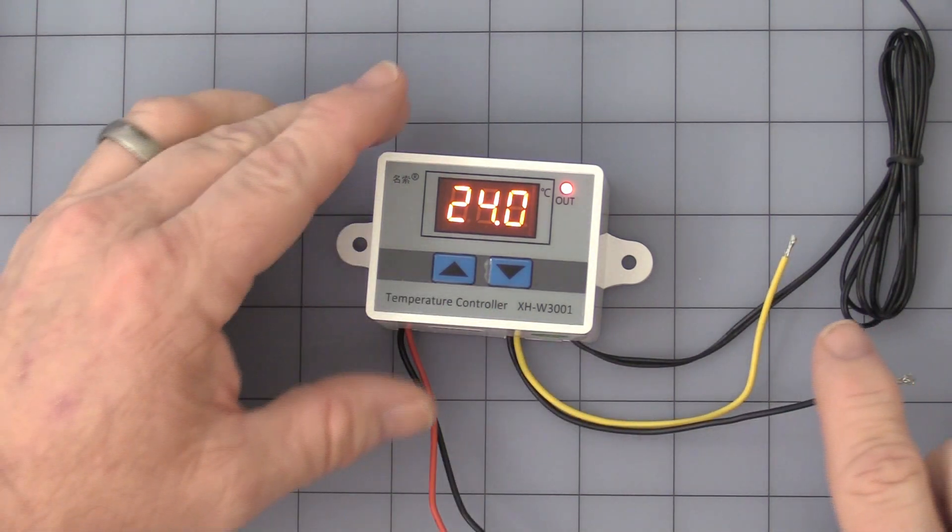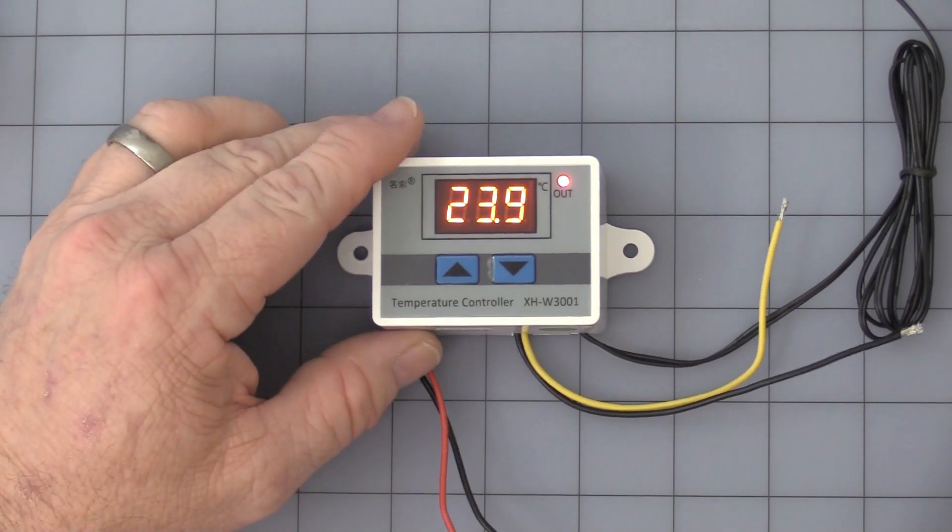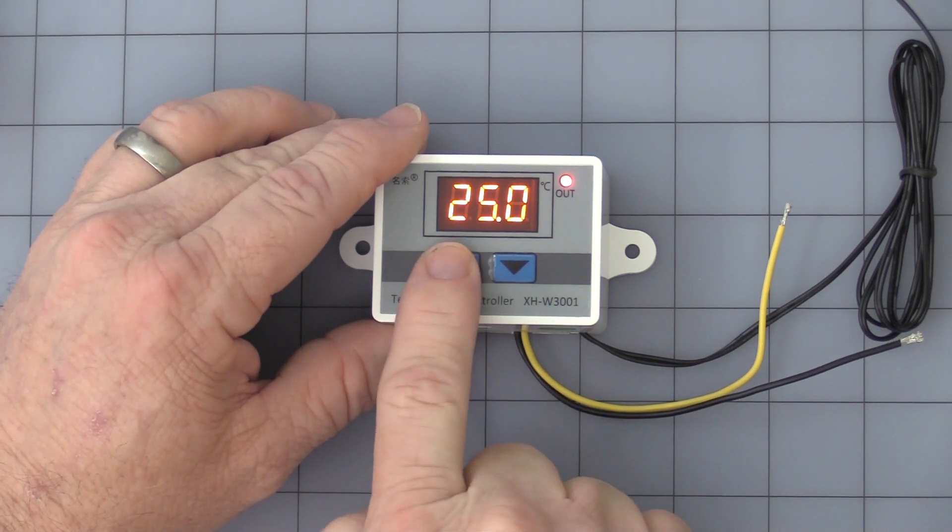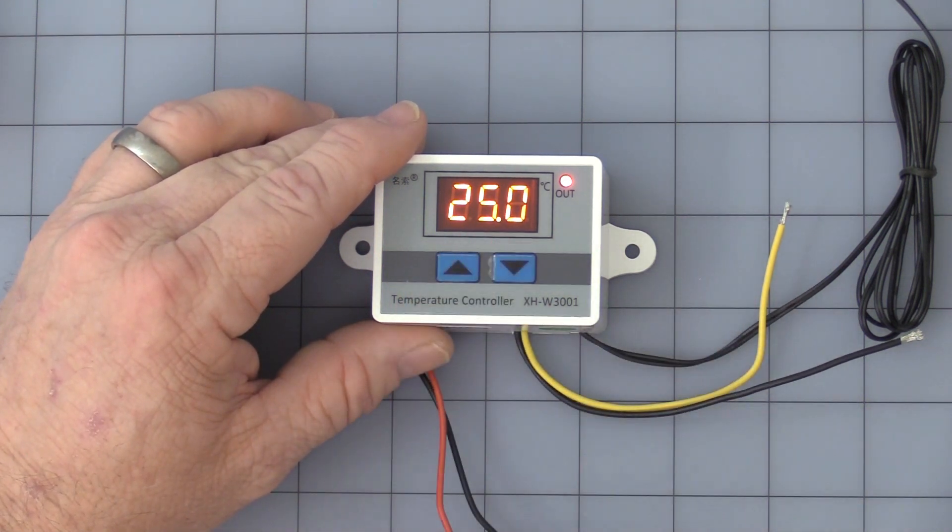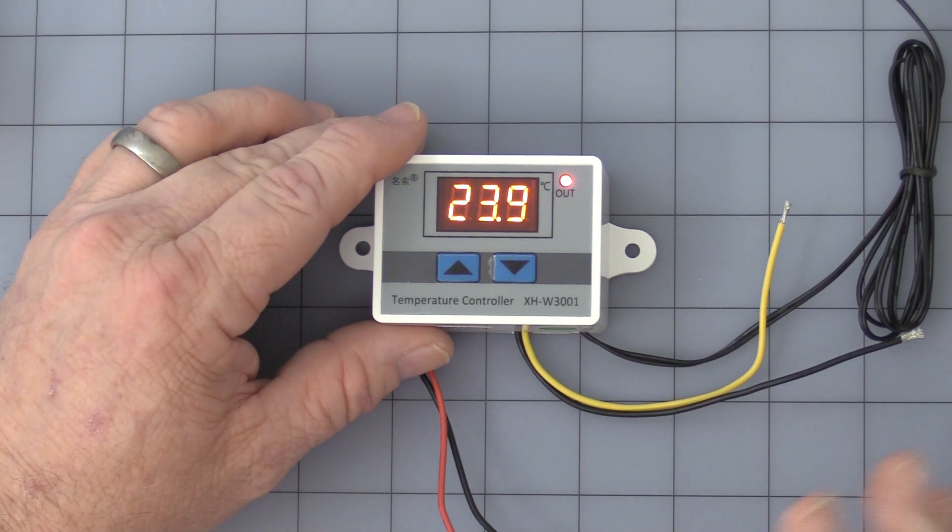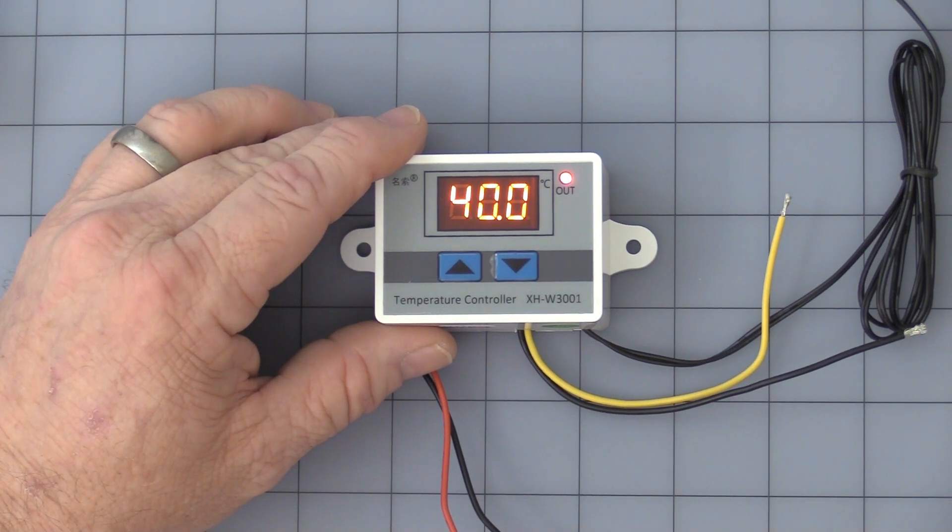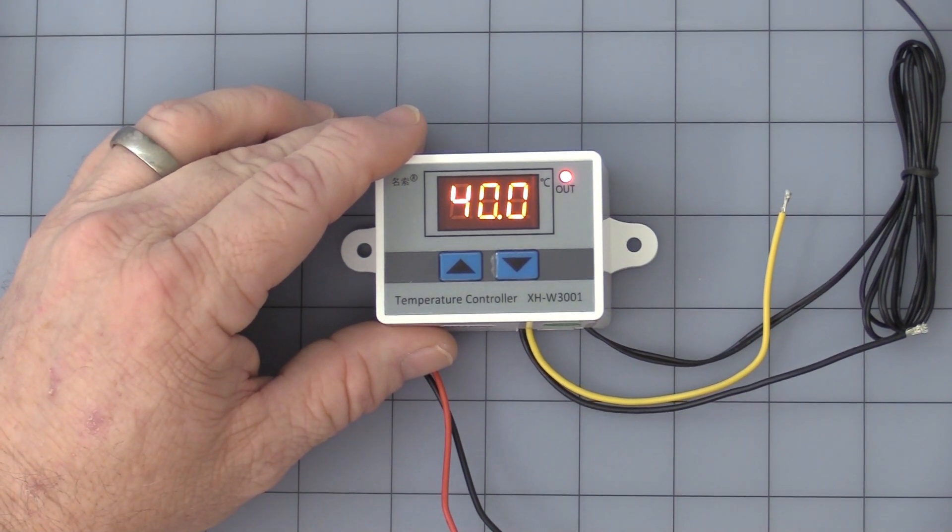Alright, let's get into some programming. To know where the set points are, you simply, on the up arrow you press, it comes factory set at 25 degrees Celsius. Leave it alone for a few seconds. It goes back to displaying air temperature. Press the down arrow. That is the other setting at 40, it comes factory set at 40 degrees Celsius.